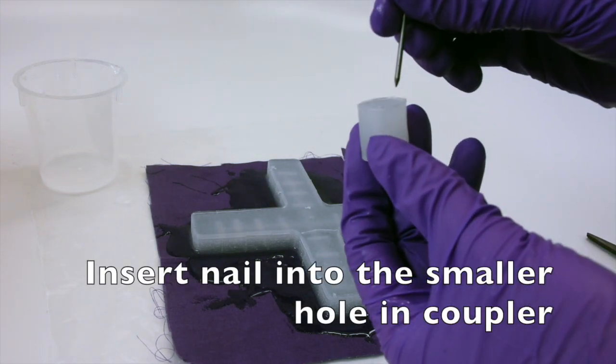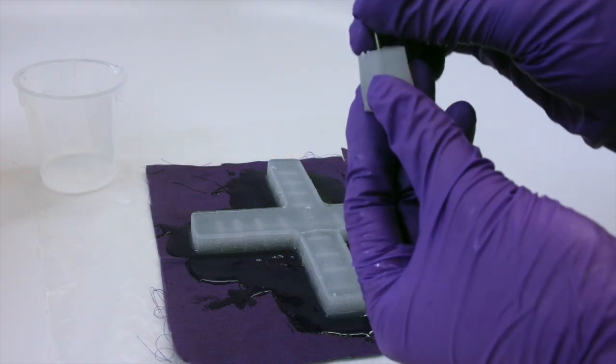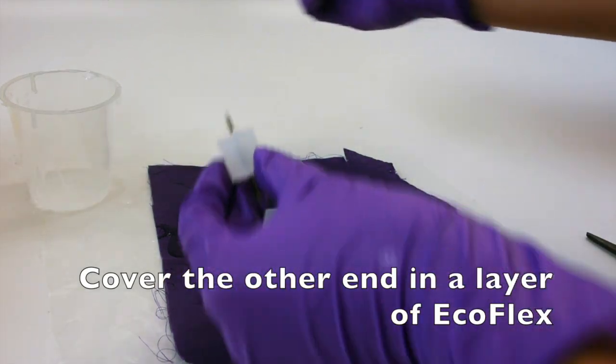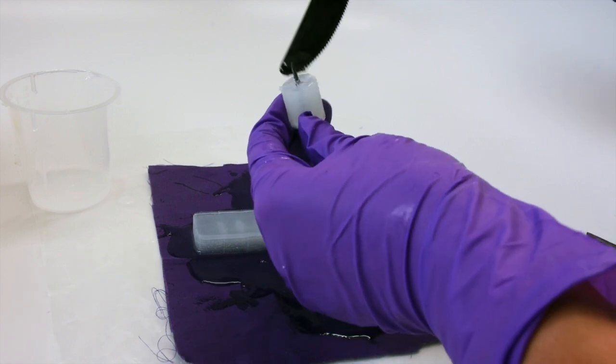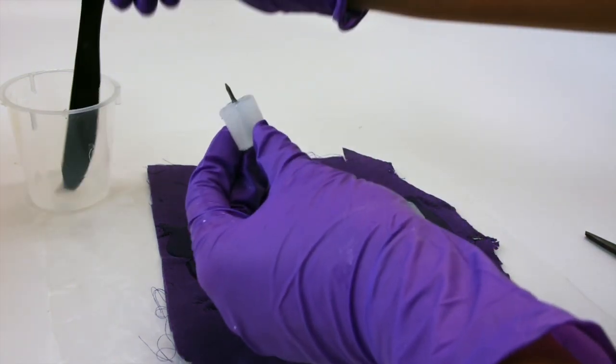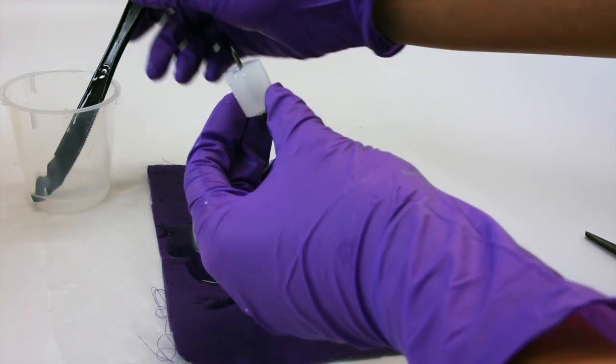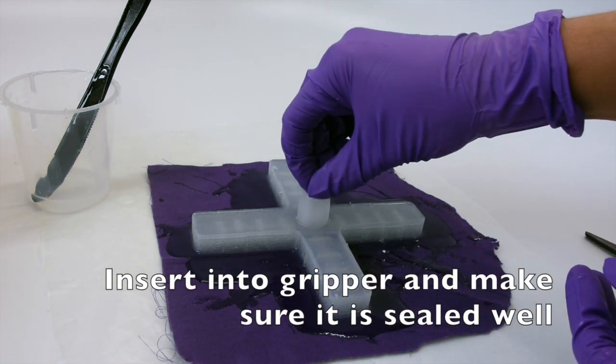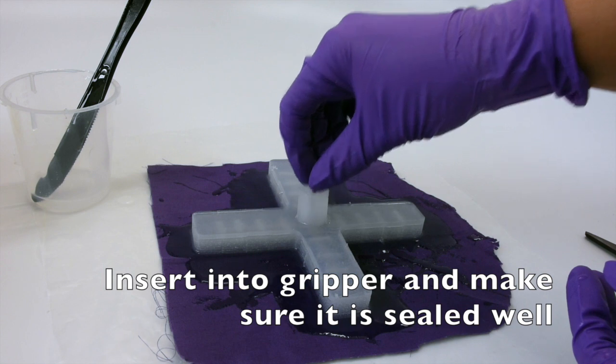Insert the nail into the smaller hole in the coupler. Then, put a layer of EcoFlex around the bottom of the coupler where the bigger hole is. Insert the nail into the hole in the middle of the gripper. Press the coupler down and make sure it is sealed well.